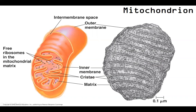Now in the center, this is referred to as the matrix. Processes like the citric acid cycle will go down here. We may also notice that mitochondria have a lot of free ribosomes — only free ribosomes because they don't have organelles inside them.